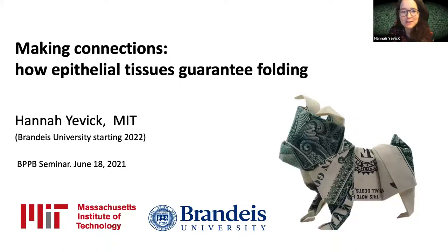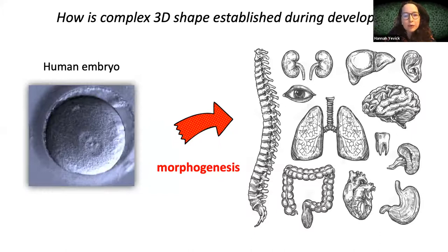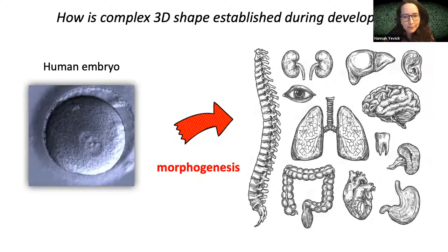Thanks to the organizers for the opportunity to talk today about my work on how epithelial tissues guarantee folding. What I'm interested in is how complex 3D shape is established during development — how you go from a single cell or spherical shape into a multicellular organism comprised of many intricate structures. This process of morphogenesis necessitates the coordinated movement and deformation of huge populations of cells, and I'm interested in the physics of how simple interaction rules between cells inside tissues can drive the necessary shape changes in a mechanical way to build 3D shape robustly.